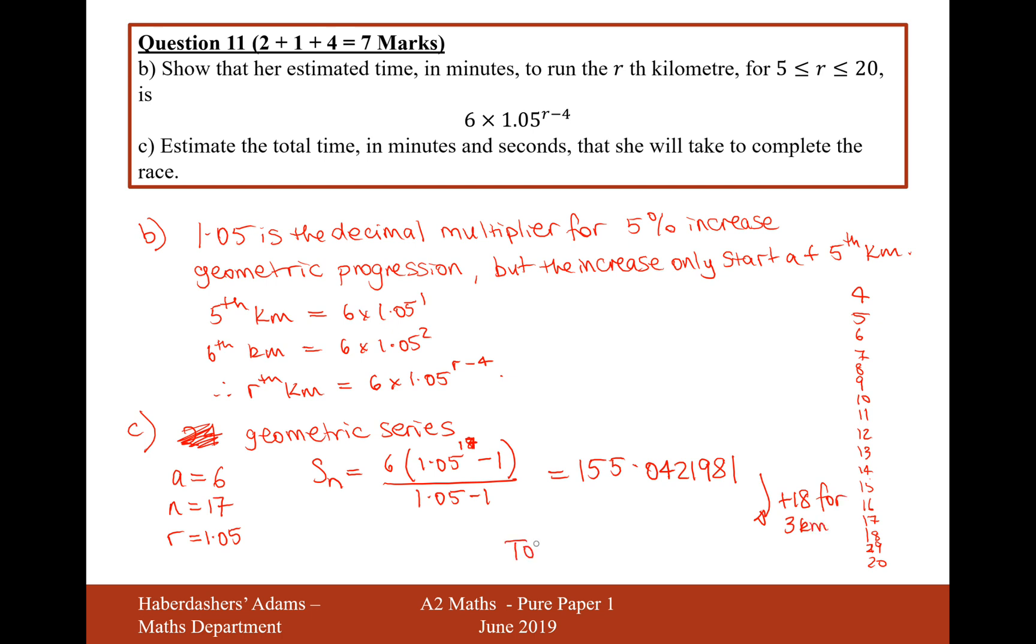So the total answer equals, when we add the 18, it would be 173.0421981. And then translate this into minutes and seconds. So that would be 173 minutes and 3 seconds.